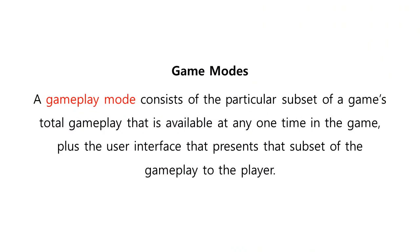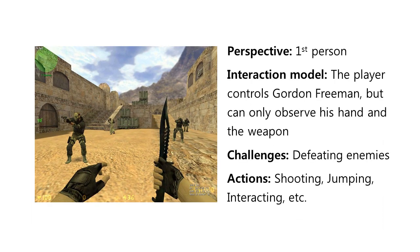Video games include at least one gameplay mode. A gameplay mode consists of the particular subset of a game's total gameplay that is available at any one time in the game, plus the user interface that presents that subset of the gameplay to the player. For example, this gameplay mode has a camera model of first-person perspective. For its interaction model, the player controls Gordon Freeman, the name of the avatar, but can only observe his hand and the weapon.